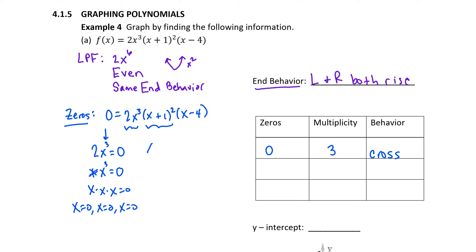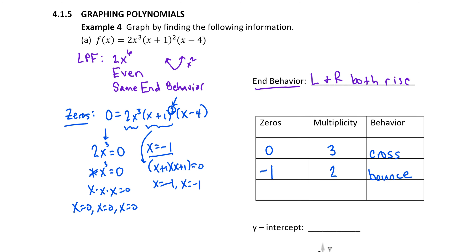Moving on to the next factor, the zero there is negative one, but it came from a factor with an exponent of two, so negative one has multiplicity two. (x+1)² is really (x+1)(x+1); setting each equal to zero just gives negative one twice. At a zero of even multiplicity, the graph is going to bounce. Our third zero is x equals four, from a factor with exponent one. At a zero of odd multiplicity, the graph is going to cross.